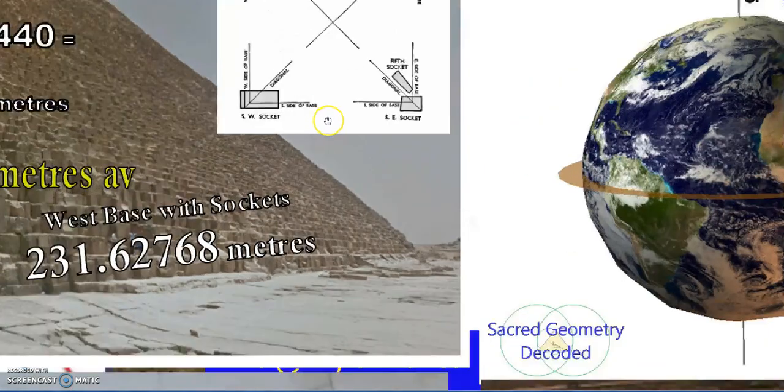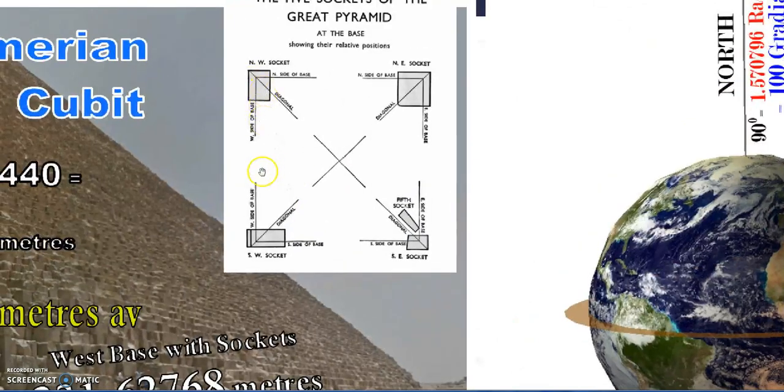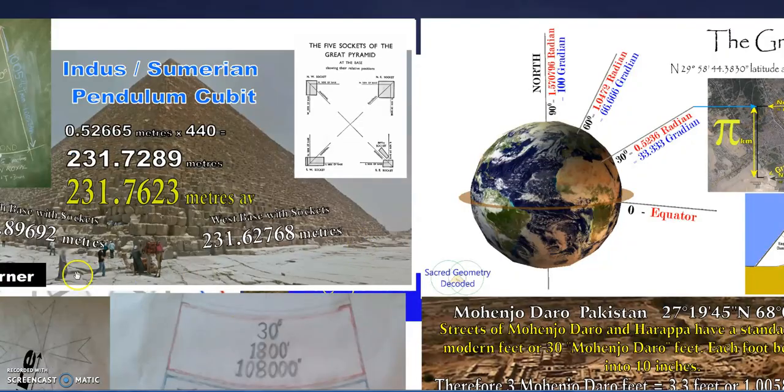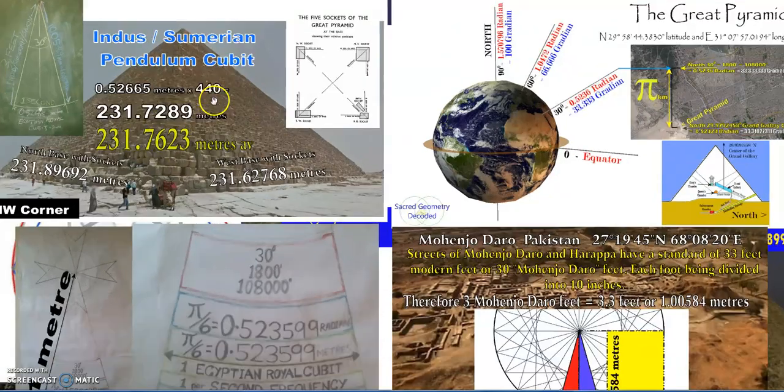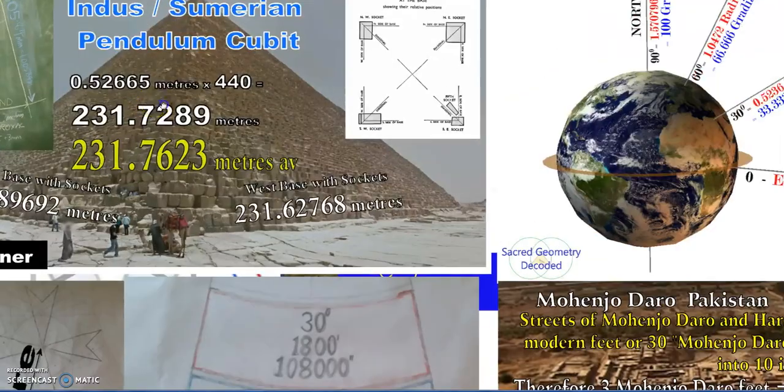The pyramid—this square on the inside is the pyramid. These four blocks at the corner are called sockets. They give the base of the pyramid an extra little bit of length. We have a slightly larger pyramid base length if you include the sockets.